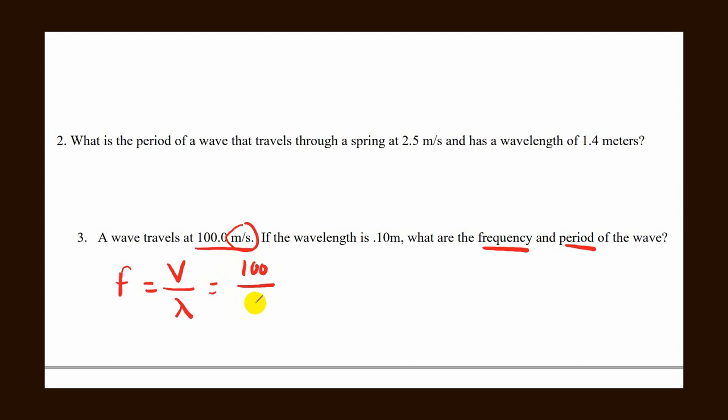Divided by 0.1 is equal to multiplied by 10. So 100 multiplied by 10, which will give you 1,000. That's 1,000 frequency. Frequency is measured in hertz, so 1,000 hertz.